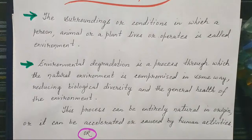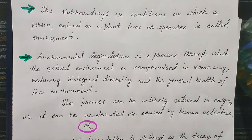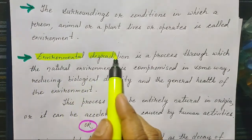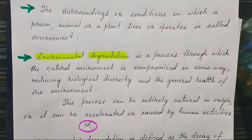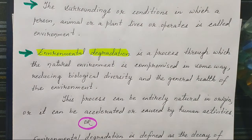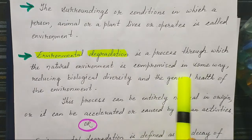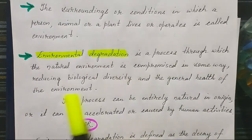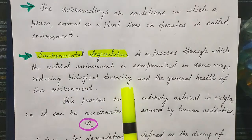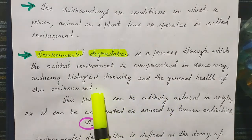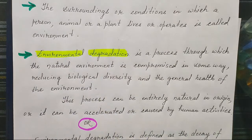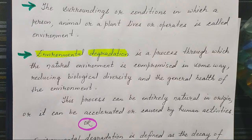When we talk about environmental degradation, what do we mean by it? Environmental degradation is a process through which the natural environment is compromised in some way, reducing biological diversity and the general health of the environment. In short, it is the decay of the environmental system due to human interference.